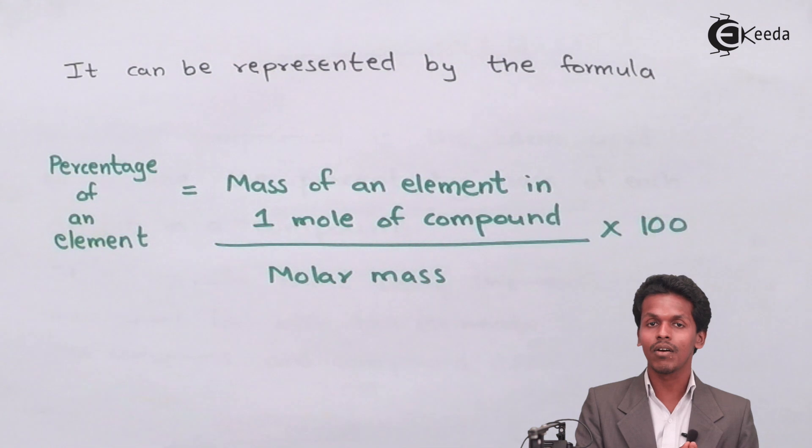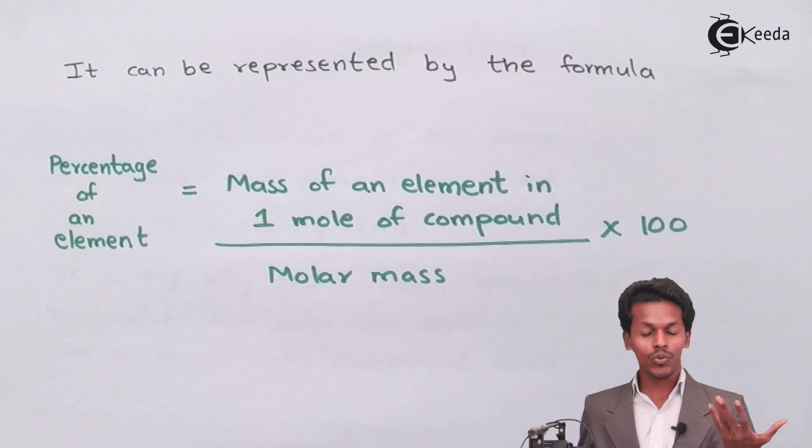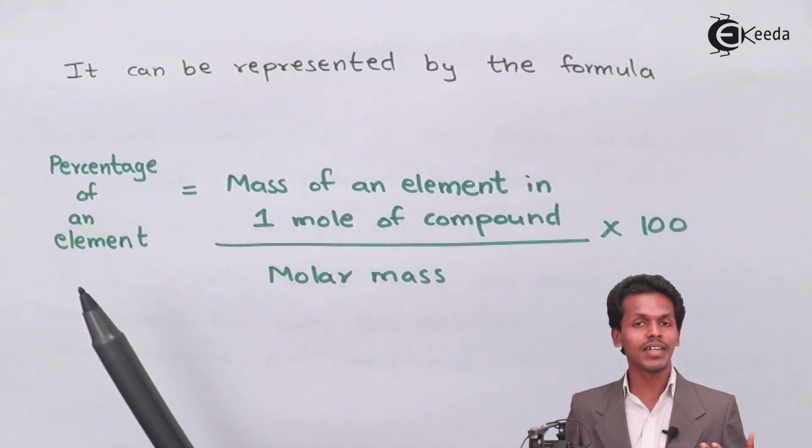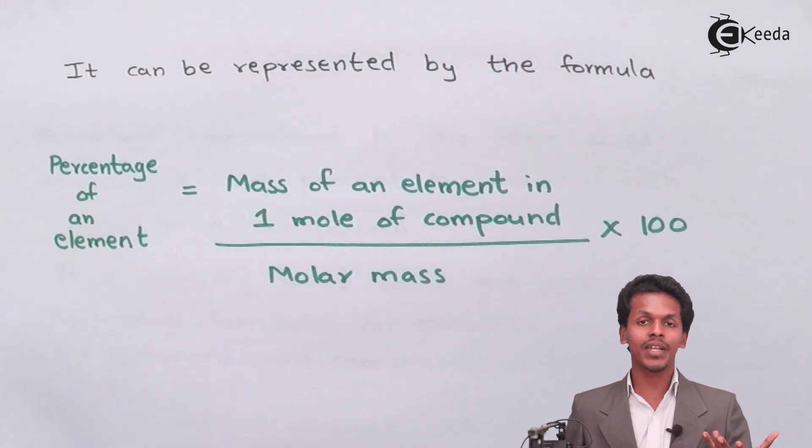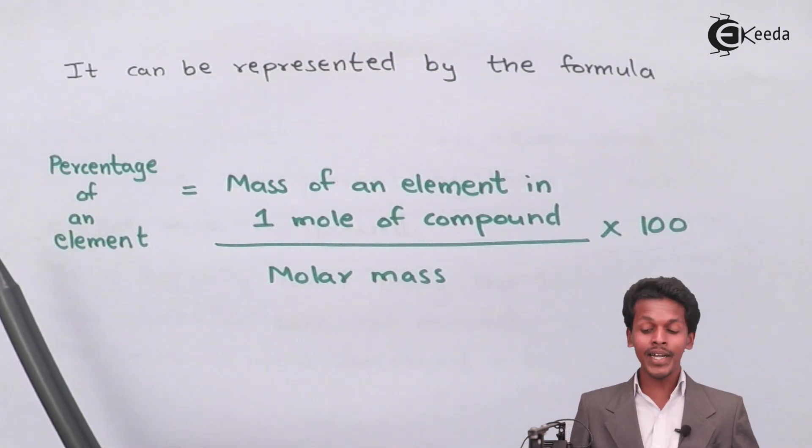Then we could easily solve it to calculate what would be the percentage of that element. The mass of that element in one mole of a compound is divided by the molar mass of the compound.